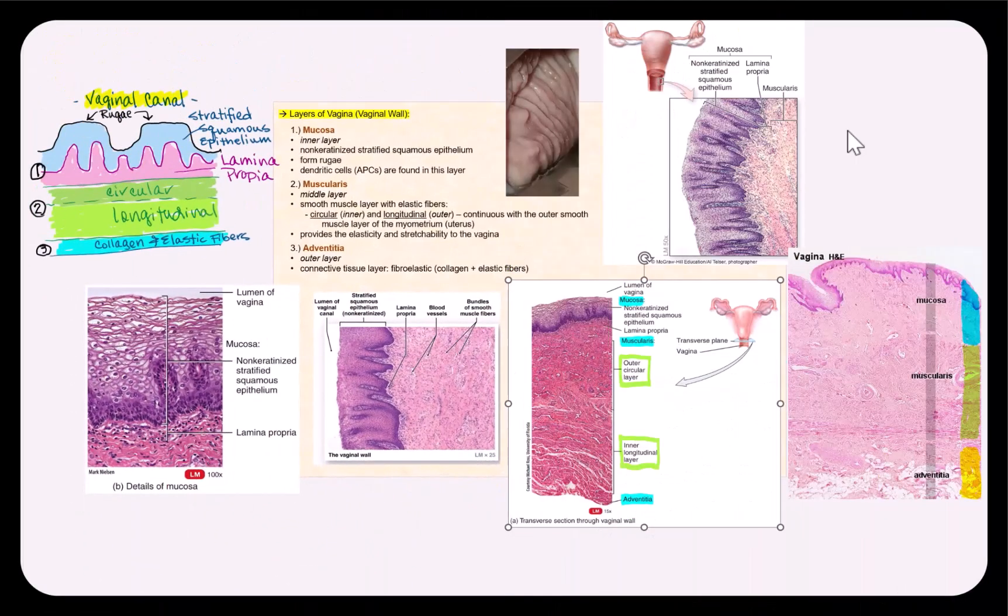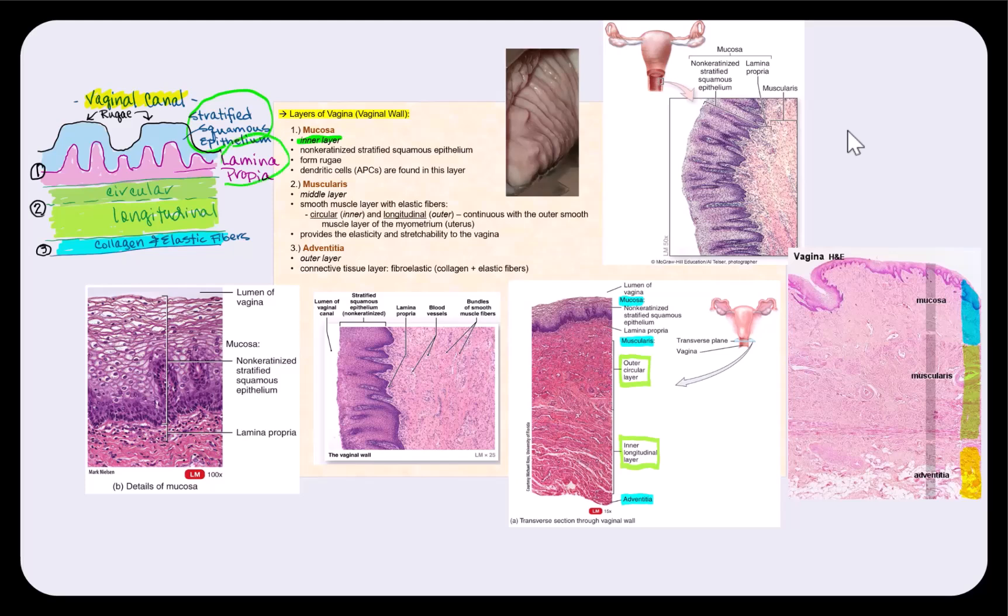The layers of the vaginal wall consist of the innermost layer called the mucosa, and we have our epithelial tissue. This time it's non-keratinized stratified squamous epithelium that directly faces the vaginal canal. It will form the rugae, which are again these foldings that we find along the outer surface of the vagina. And of course we know that the stratified squamous epithelium will be anchored to the basement membrane, and deep to that will be the lamina propria.